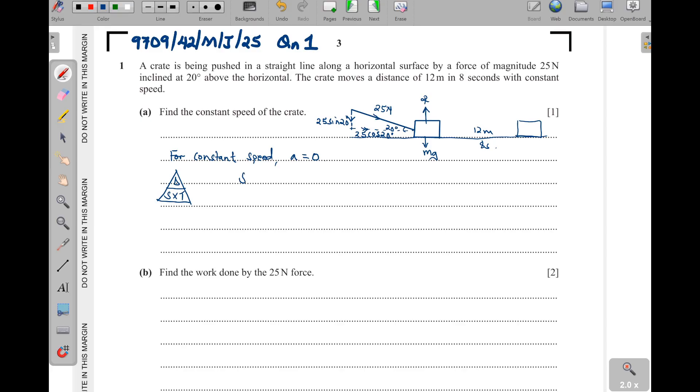So here we need the speed. Speed is going to be equal to distance over time. What is the distance? Distance is 12 meters. Time is 8. This one will give us 1.5 meters per second. As simple as that.